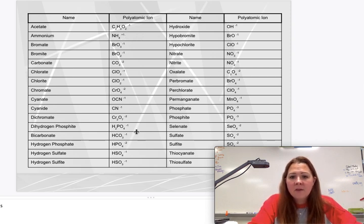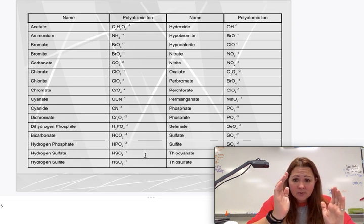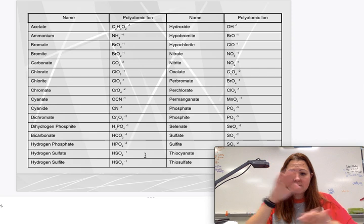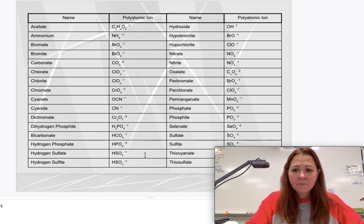But all of the other ones like cyanide is CN with a negative one charge. Dichromate, Cr2O7 with a negative two. So these groups of elements are stuck together. They have a charge which allows them to bond in an atom and we'll use them a lot with your nomenclature.